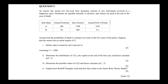Question 5 is a ruin theory exam question. We're going to read through the preamble and then answer the four parts. An insurer has issued two five-year term assurance policies to two individuals involved in a dangerous sport. Premiums are payable annually in advance and claims are paid at the end of the year of death.